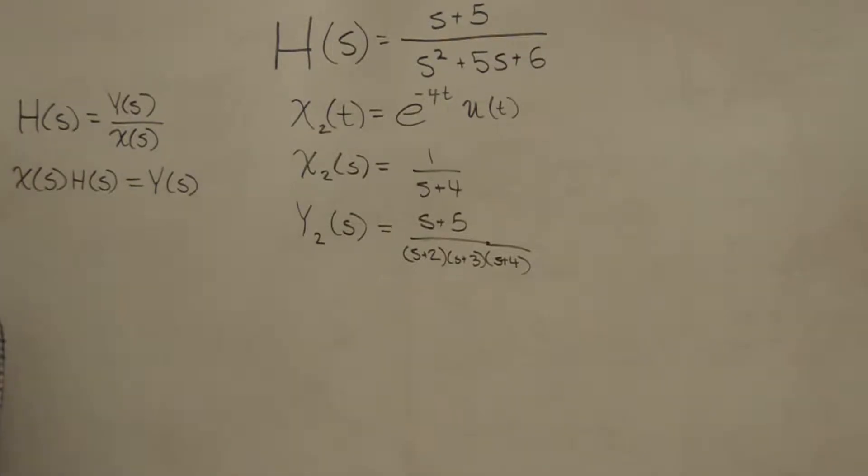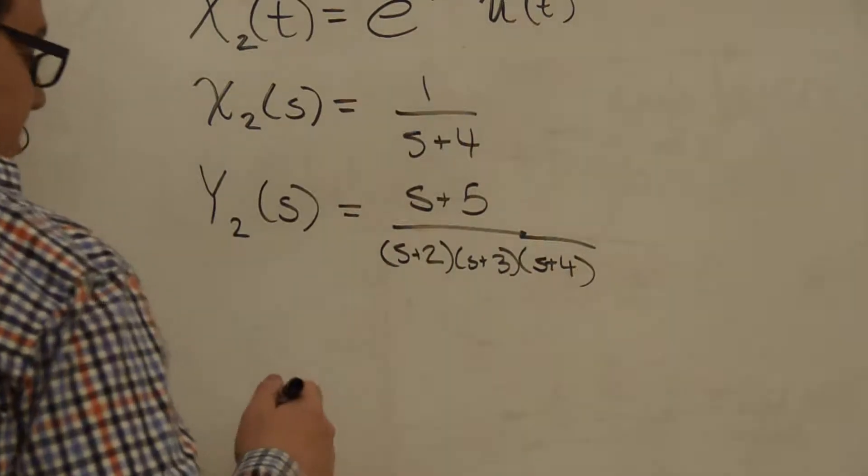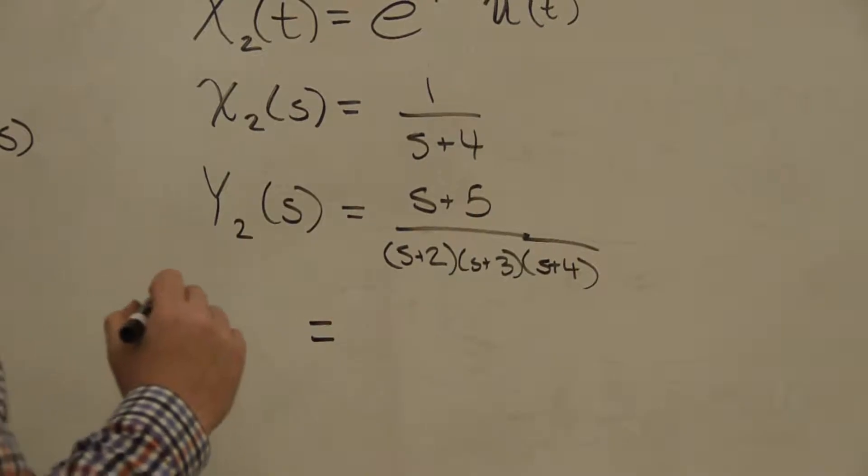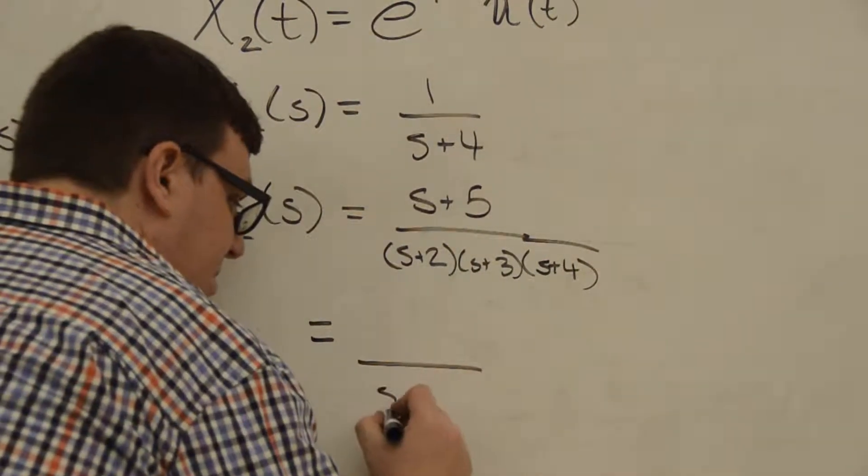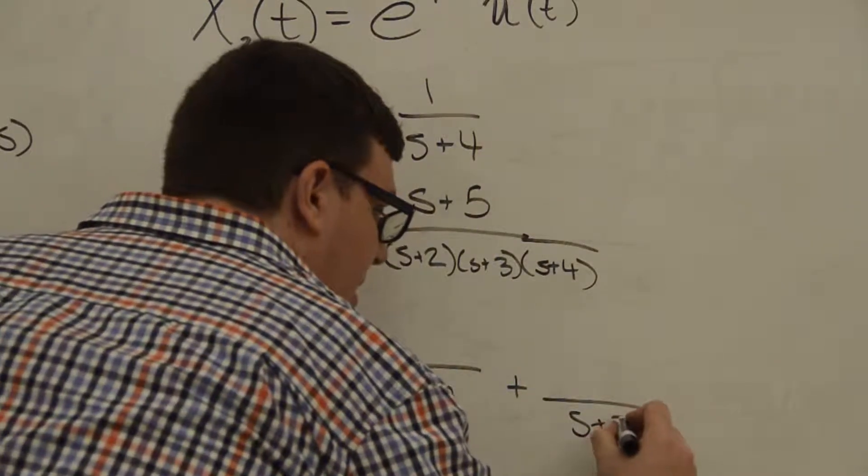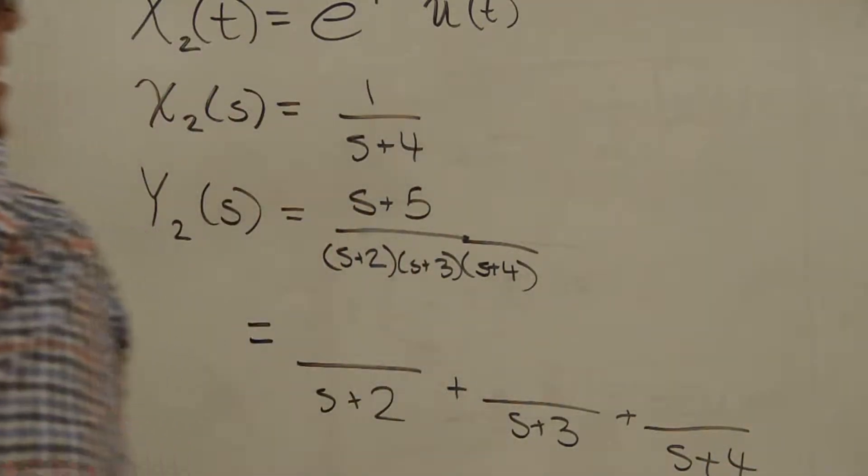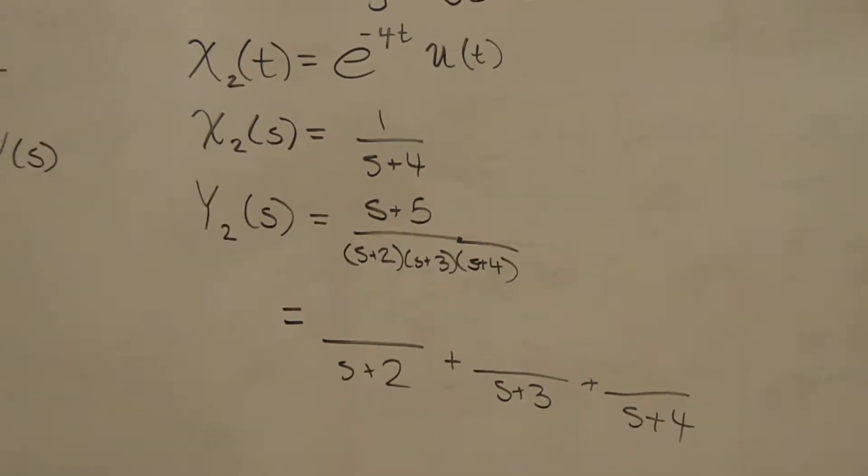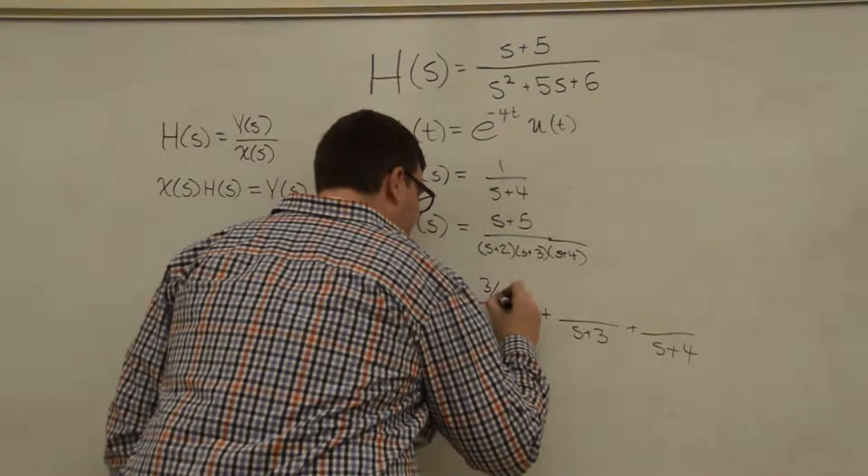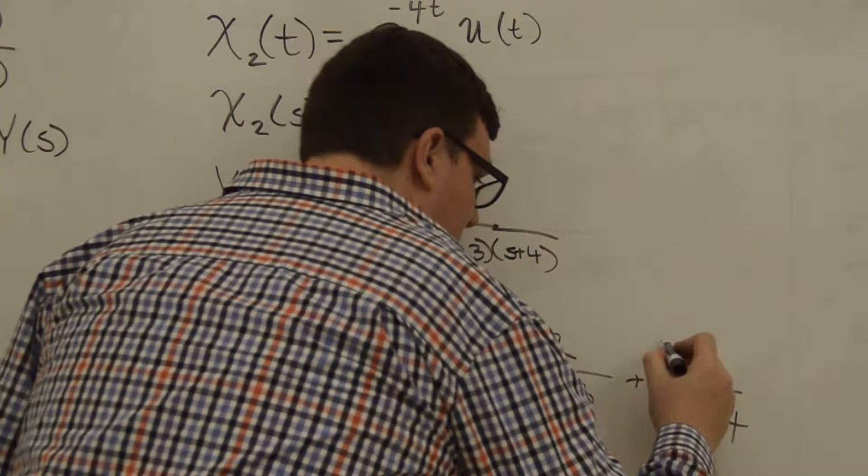And again, this is a third order polynomial in our denominator, which we don't know how to take the inverse Laplace transform of easily. So we're going to use our partial fraction expansion. And so we should have something over s+2, plus something over s+3, plus something over s+4. And again, solving this however you feel comfortable solving partial fractions should get you 3/2 up top here, -2 over here, and 1/2 here.